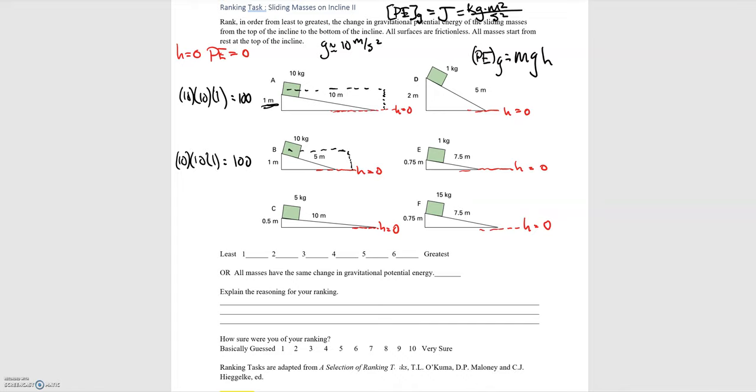Coming down here to C, we have 5 kilograms times 10 meters per second squared times 1 half, which is equal to 25.